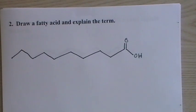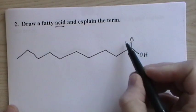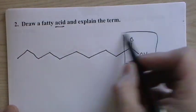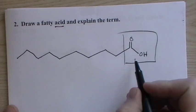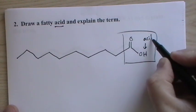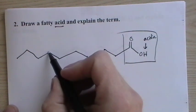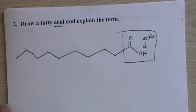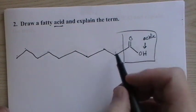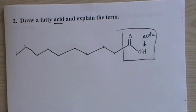It says to draw a fatty acid and explain the term. I already drew these out just to save some time. A fatty acid—the acid part comes from this carboxylic acid group on the end, the carboxyl group, and this hydrogen is acidic, so that's the acid part.